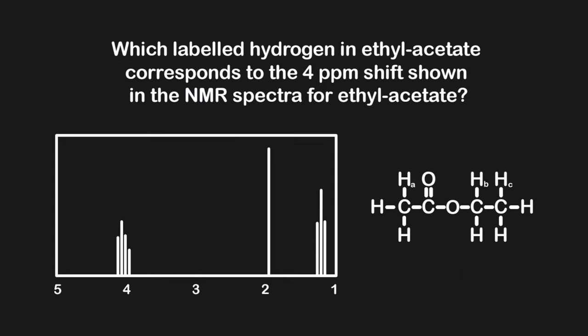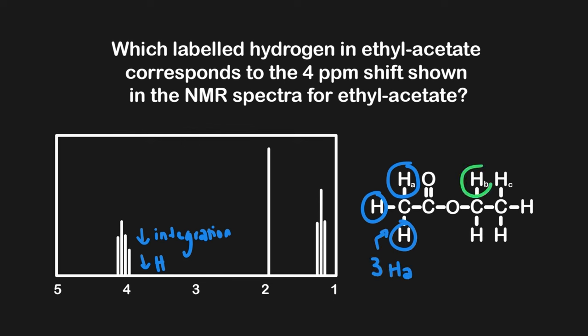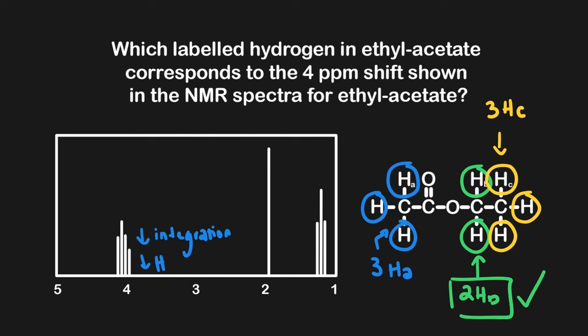Let's apply this to a practice problem: which labeled hydrogen in ethyl acetate corresponds to the signal at 4 ppm shown in the NMR spectra? Since there are three signals, the three hydrogen groups in this molecule are unique. We will look for the hydrogen group that contains the smallest number of hydrogens, since the 4 ppm signal is the shortest of the three. There are three HA hydrogens, two HB hydrogens, and three HC hydrogens. Therefore, the 4 ppm shift corresponds to HB, since it has the fewest hydrogens and produces the shortest signal.